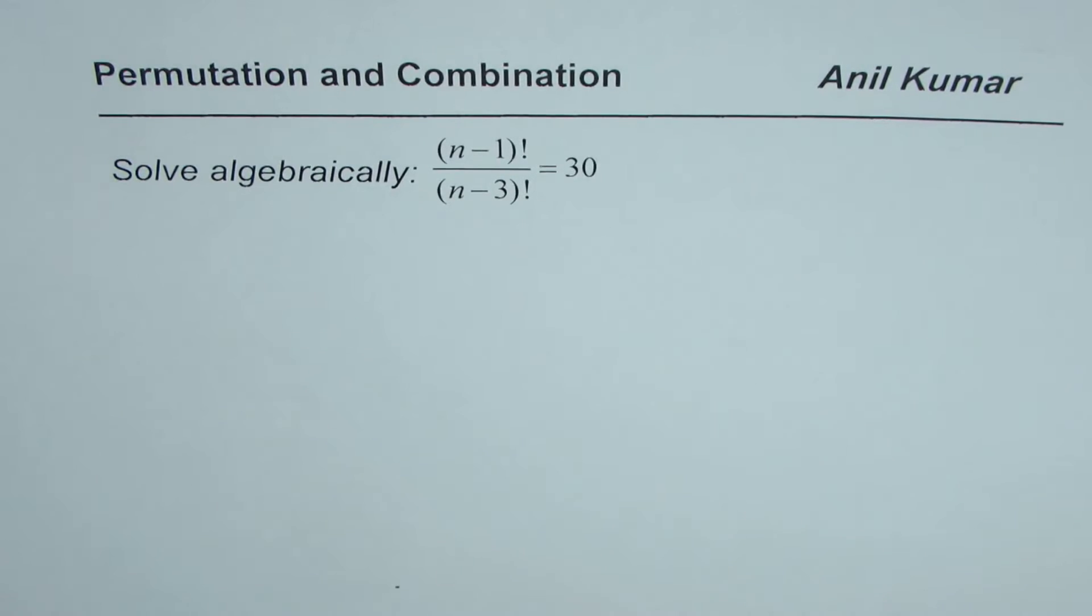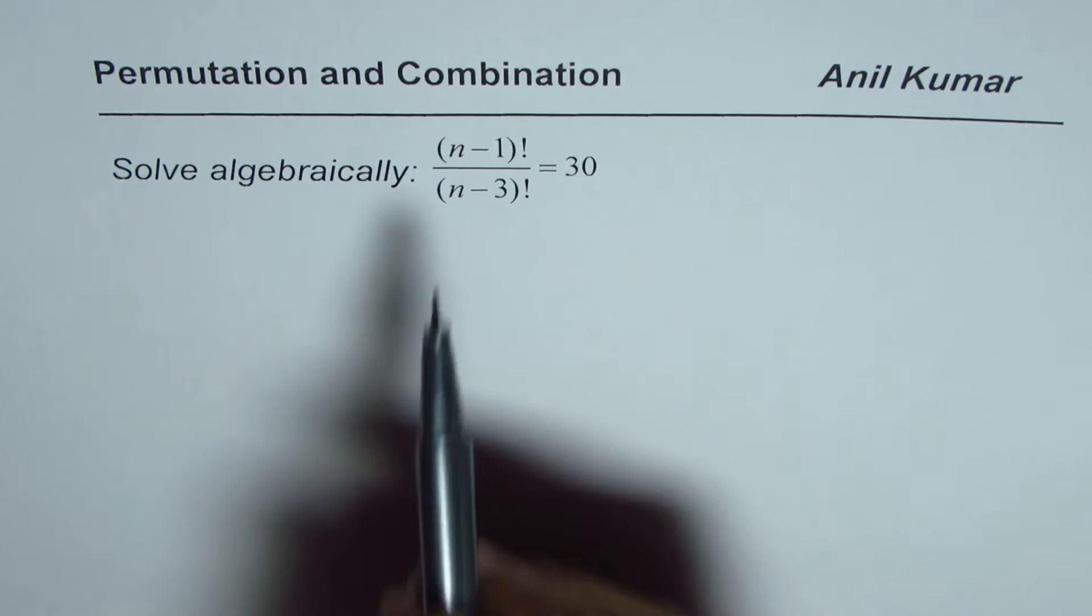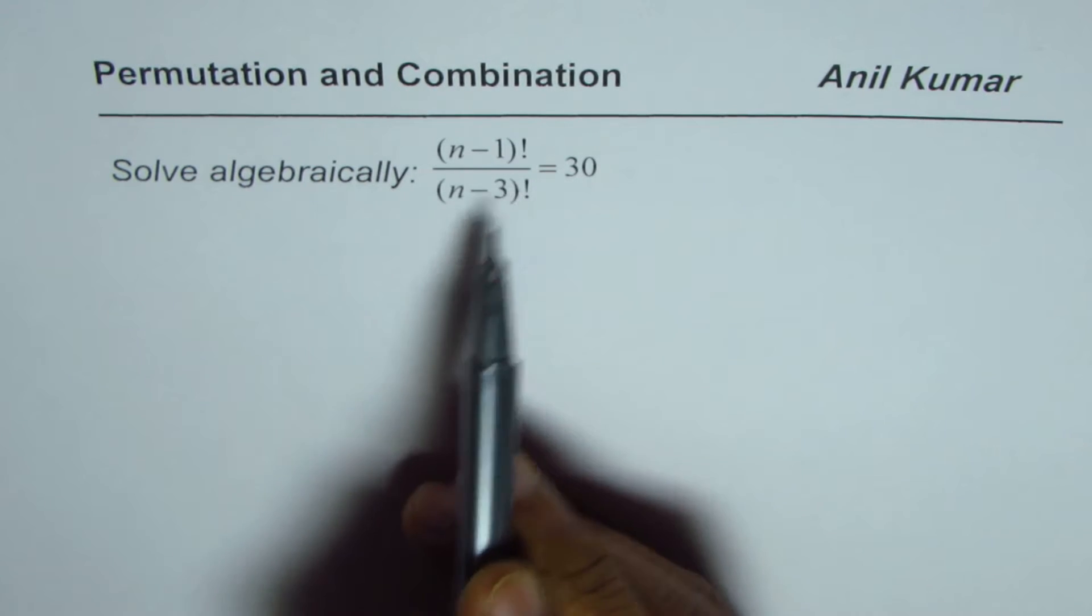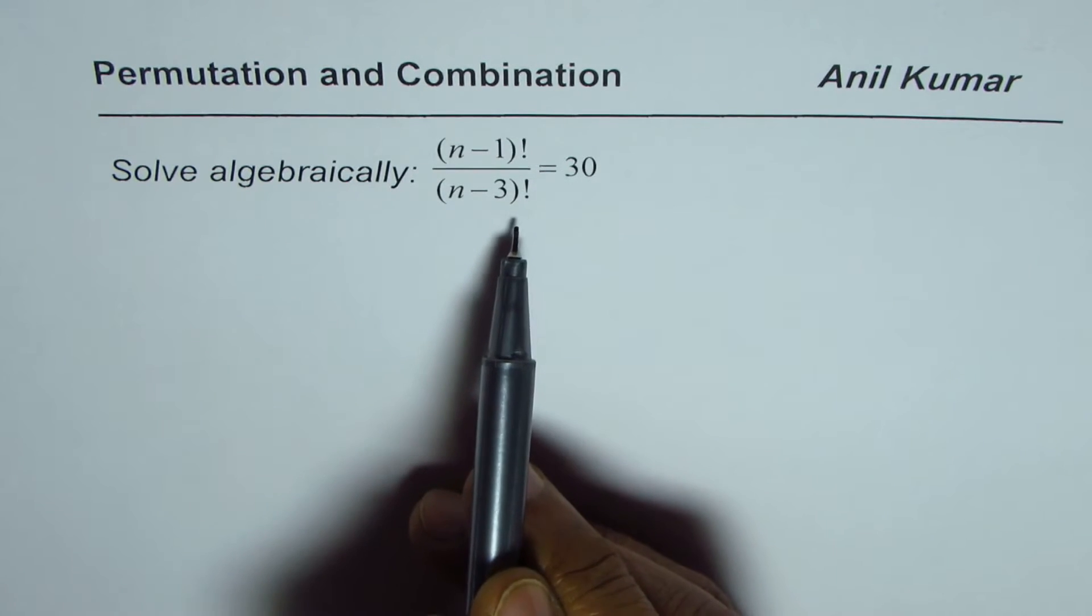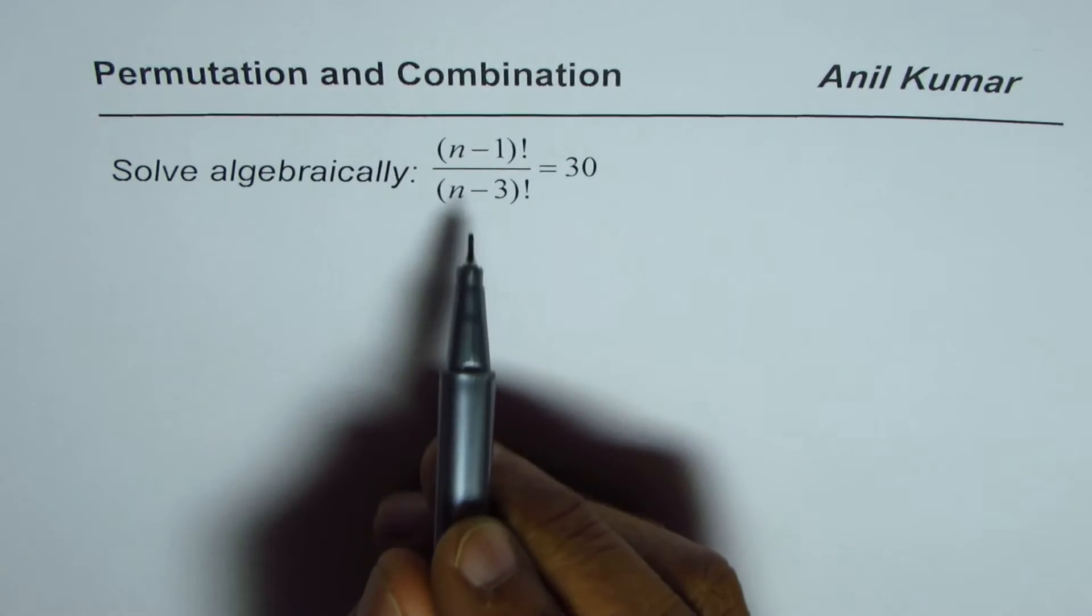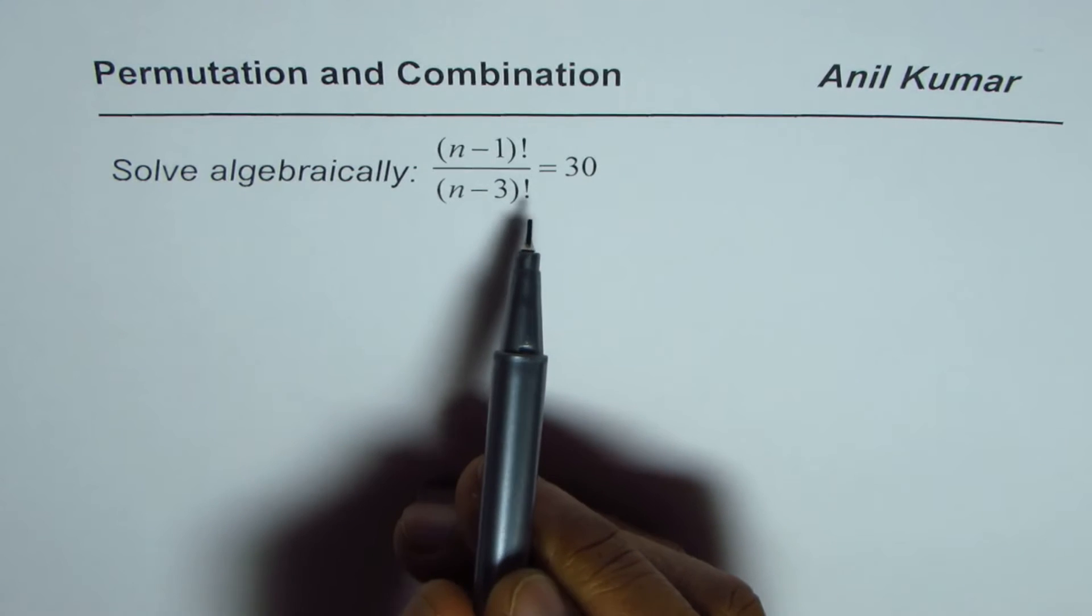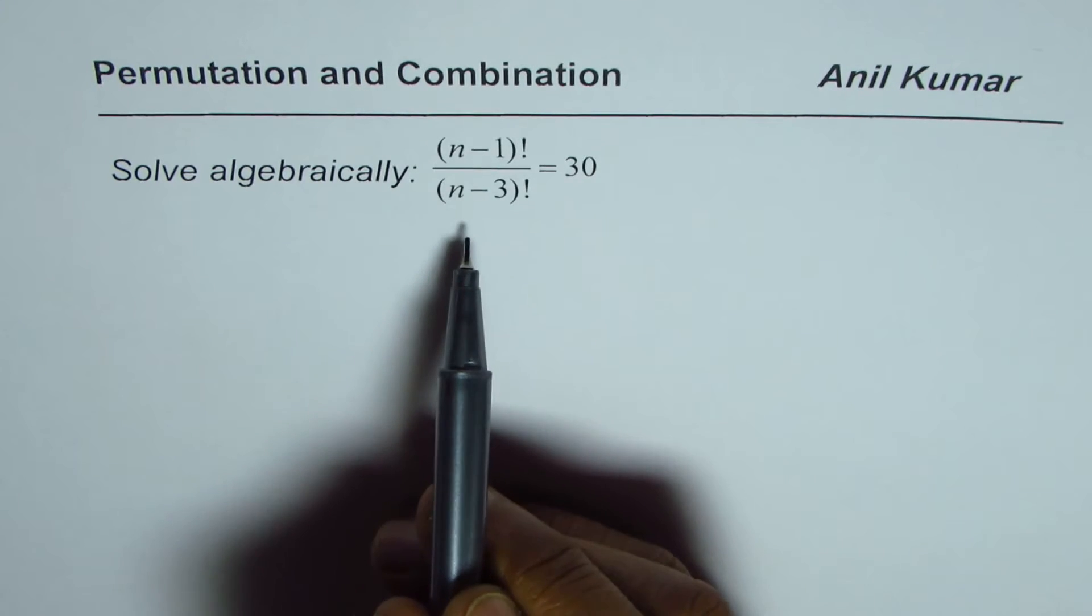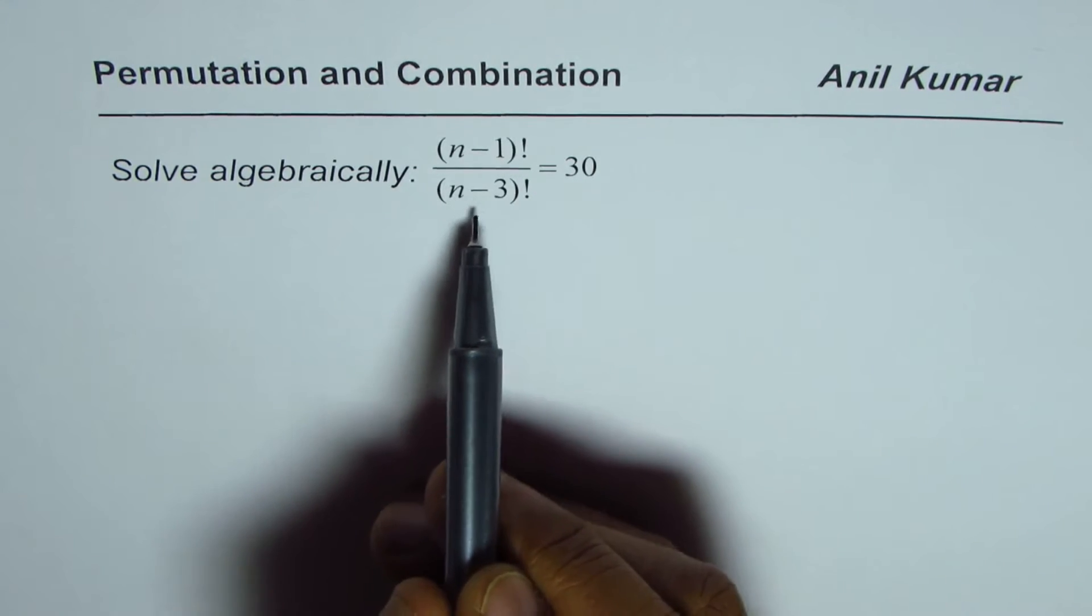I'm Anil Kumar. Here is a question: solve algebraically (n-1)! divided by (n-3)! equals 30. To solve such questions, we should write the numerator so that we could cancel out the denominator.